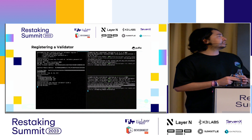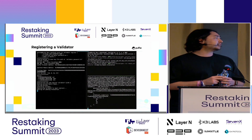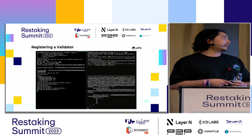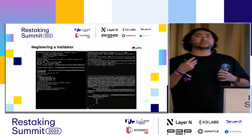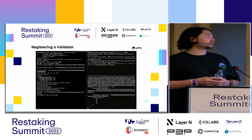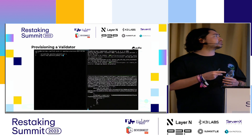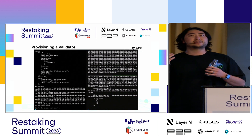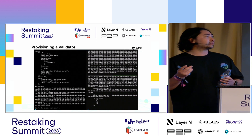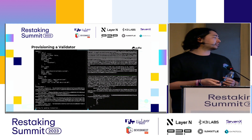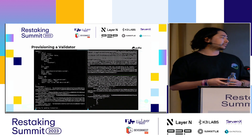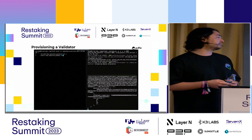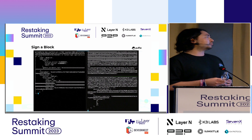The validator registers to a specific strategy by submitting their evidence on-chain and paying their bond. The contract enters them into a queue of pending validators for that strategy. Then the guardians approve that the withdrawal credentials are correct and the deposit message is valid, and provision the ETH to actually run the validator.